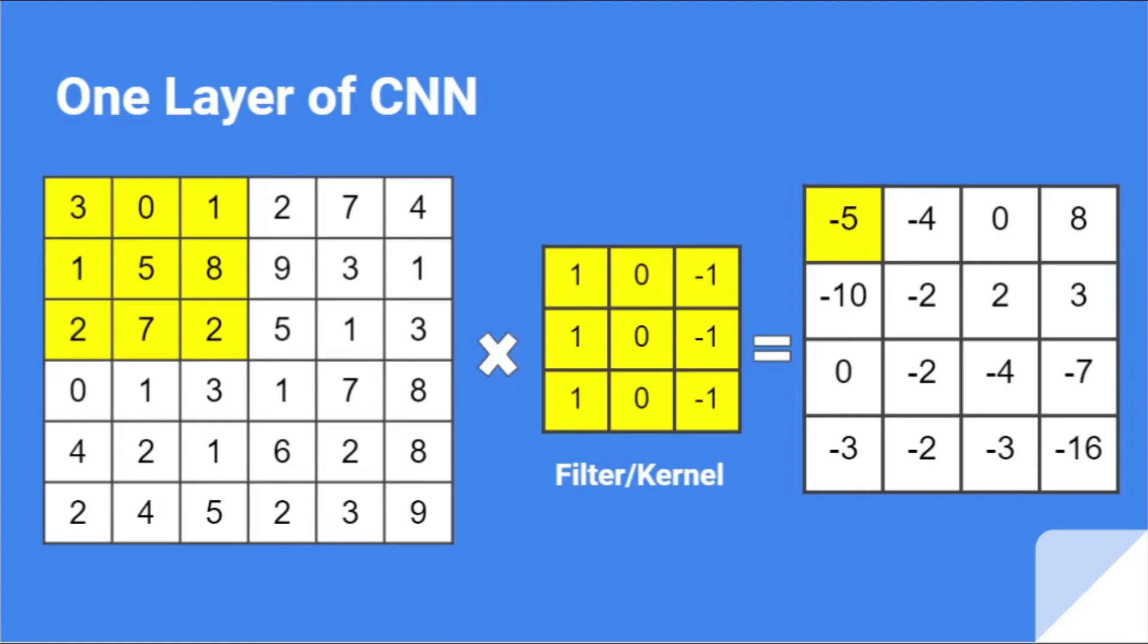We have to first understand that we pass the input on the left side and it undergoes a mathematical operation with the filter or kernel then we get an output. Usually what happens is then we use that output to input to the next convolutional neural network and it goes on till a point we need, then we flatten the matrix into a single strip similar to linear regression.